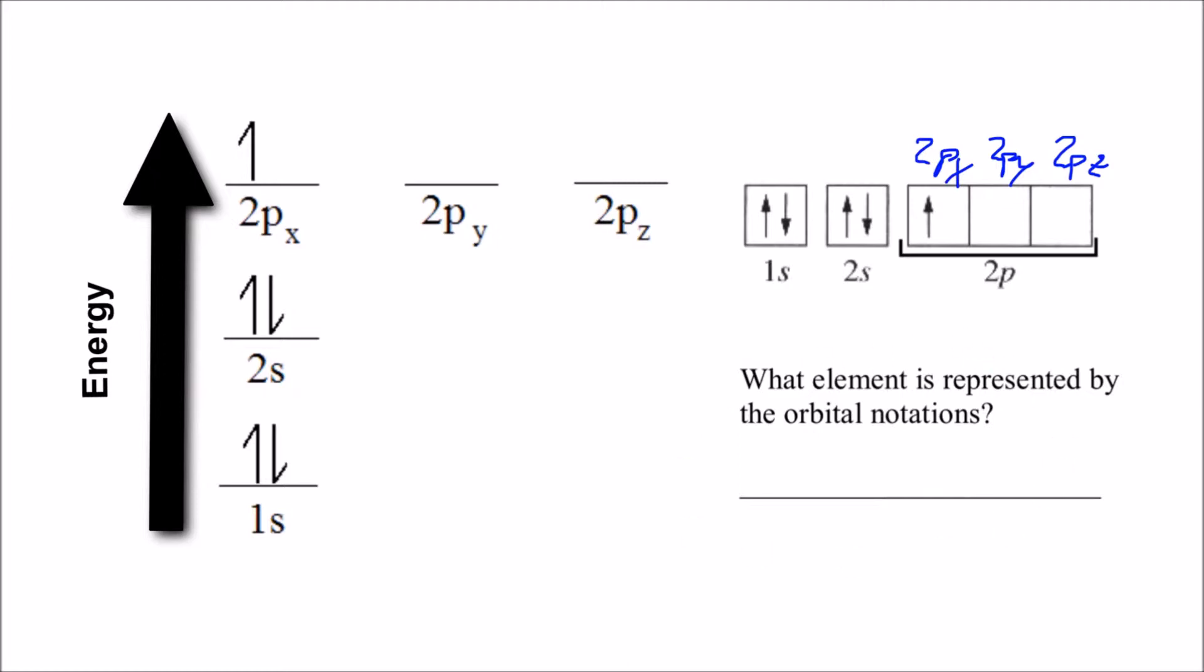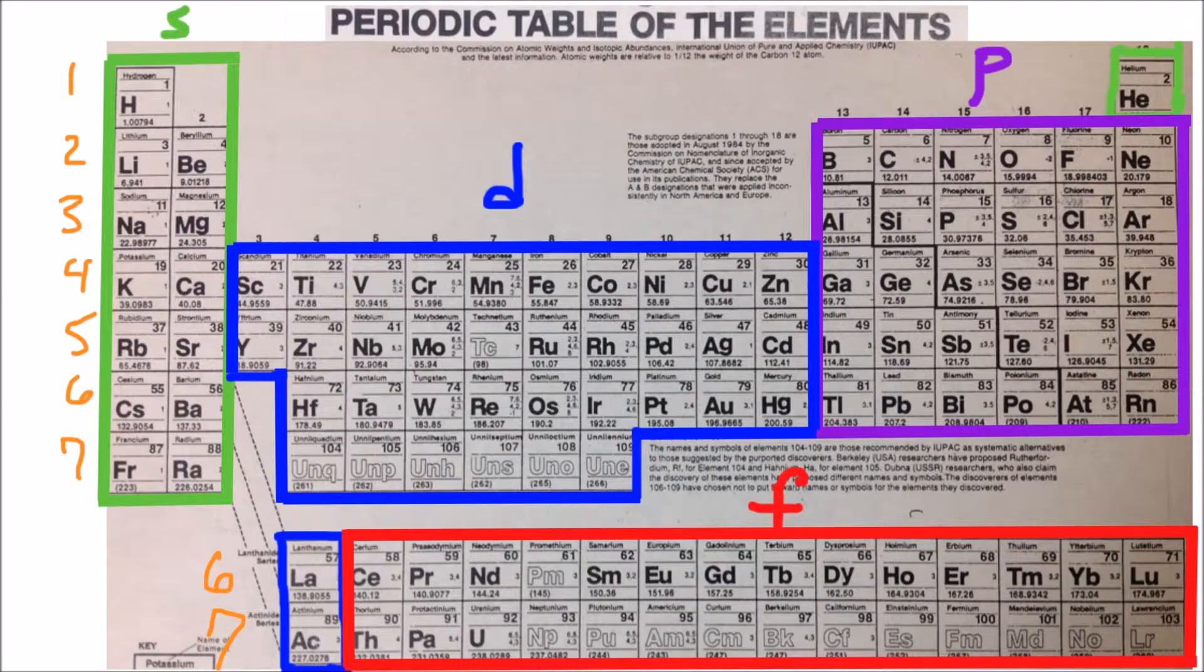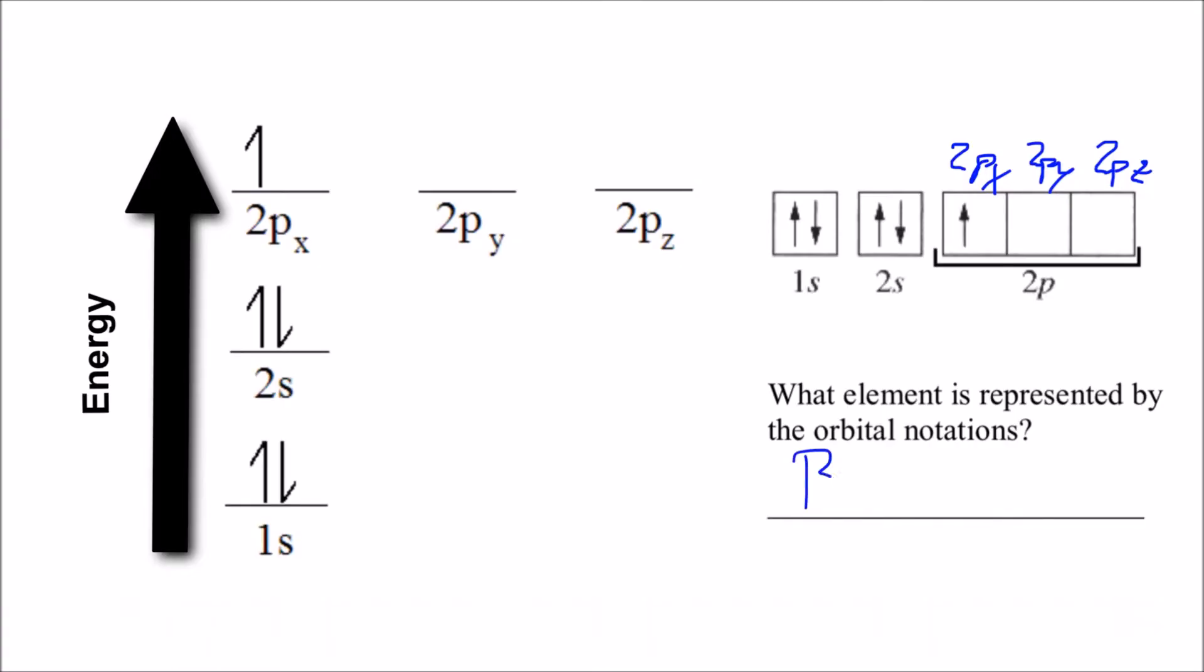What element are we talking about here where we've got only one electron in the 2p orbital? We've got 1s2, 2s2, 2p1. We must be talking about boron. So we will fill that in down here. Boron. Let's see if we can do some more.